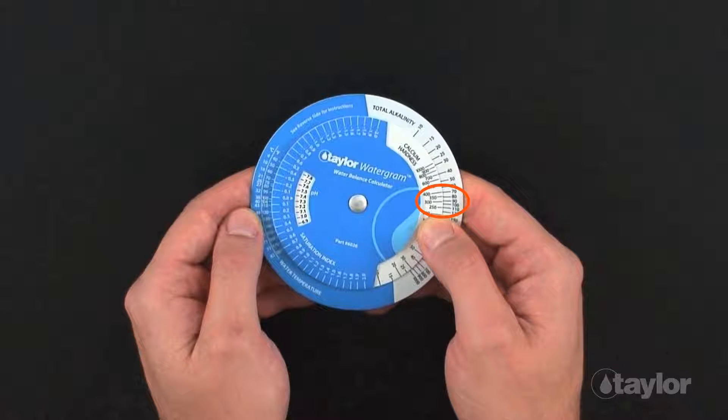If the cyanuric acid CYA level exceeds 30 parts per million, the total alkalinity value must be adjusted using the following formula.